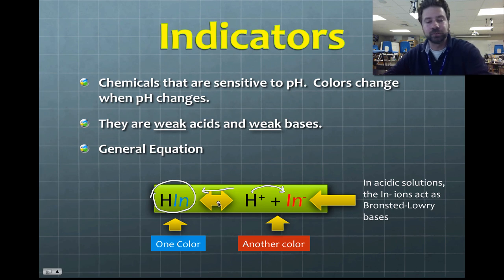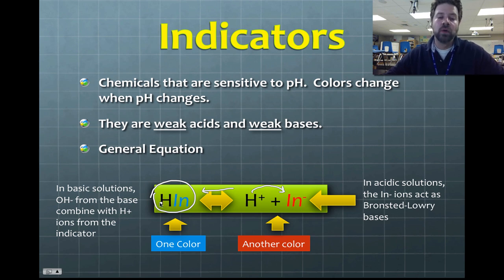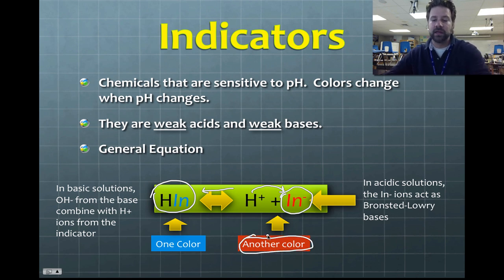In basic solutions, OH- from the base combines with H+ ions from the indicator. The H+ leaves the indicator molecule and hooks up with hydroxide ions from the base. The indicator is then left on its own in solution, and that solution would be red in that scenario.